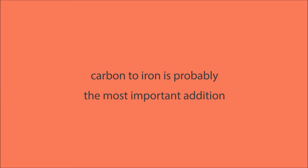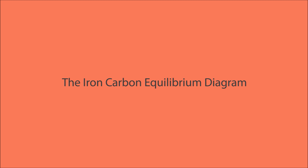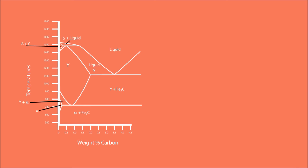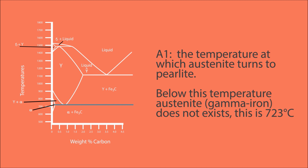The addition of carbon to iron is probably the most important addition in cast irons and steels. This makes the iron-carbon equilibrium diagram very useful. Equilibrium means that enough time has been allowed on heating and cooling for any reactions to fully complete. Many of the basic features of this diagram influence the behavior of the most complex steel alloys. The diagram is used to understand what structures will be formed at what temperatures and at what carbon contents, when steel will be fully solid, and how much of each phase will be present at a given temperature.